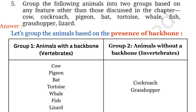We can also group the animals based on the presence of a backbone. Group 1 — animals with a backbone are called vertebrates. These animals have a well-developed vertebral column. The animals are: cow, pigeon, bat, tortoise, whale, fish, and lizard. Group 2 — animals without a backbone are called invertebrates: cockroach and grasshopper. So I have classified these animals based on their ability to fly, mode of reproduction, and presence or absence of a backbone.